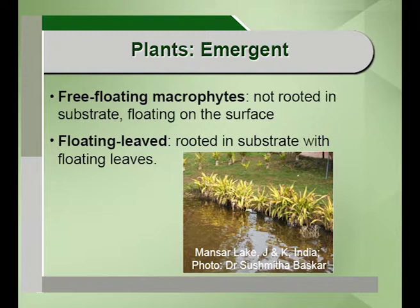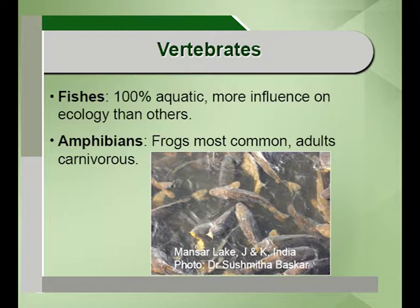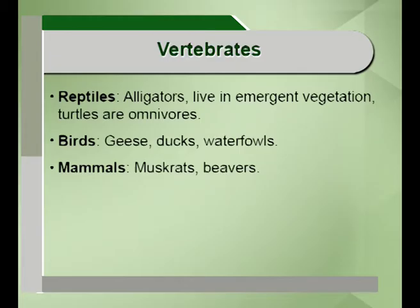Vertebrates are very important and diverse organisms in wetlands. Fishes are 100 percent aquatic and influence the ecology more than any other organism in these systems. Amphibians mainly include tadpoles and frogs, where adult frogs are carnivorous in nature. Vertebrates can also be reptiles, birds and mammals, including alligators, geese, waterfowl, muskrats and beavers.